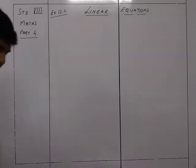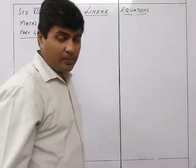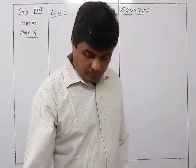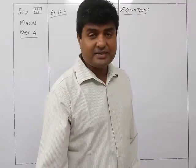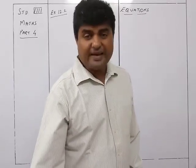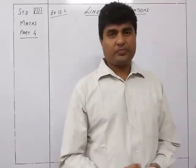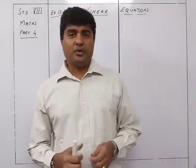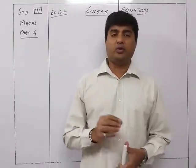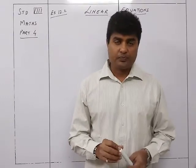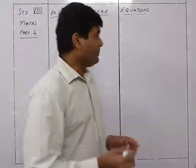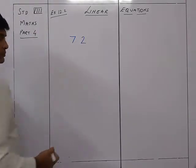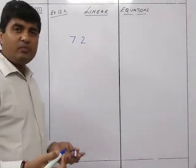We continue with exercise 12.2 and we are on the 10th sum now. This sum is based on two-digit numbers. Before we start this particular sum, I would like to explain a certain basic concept about two-digit numbers. For example, suppose I take the number 72.